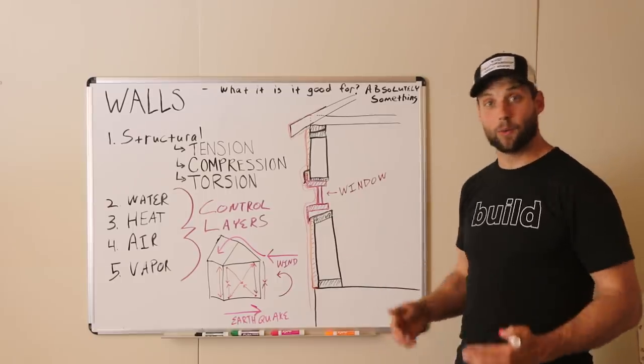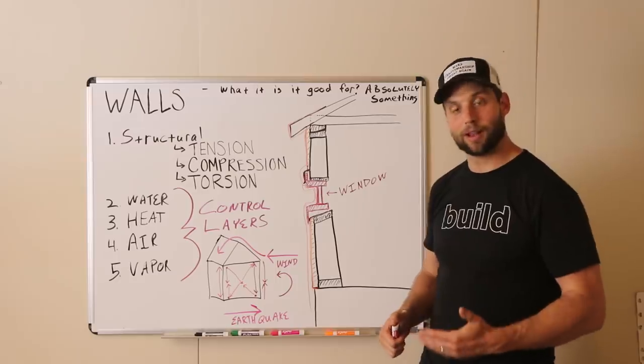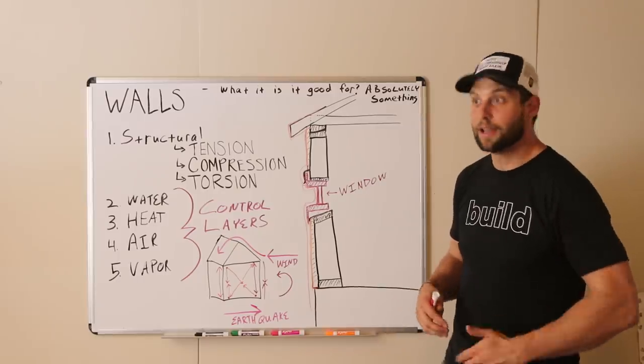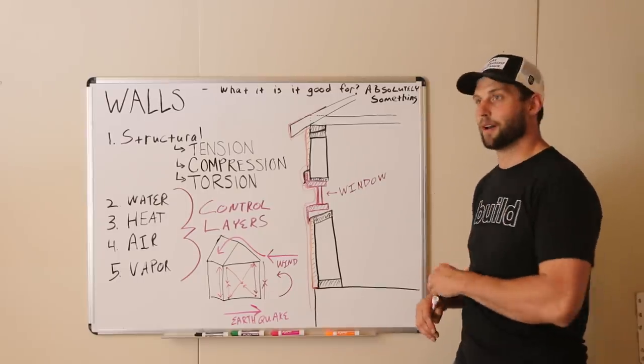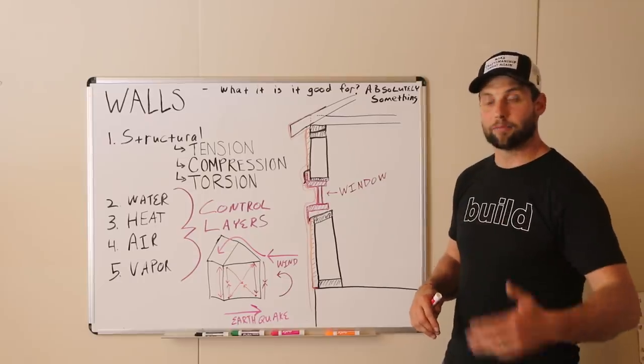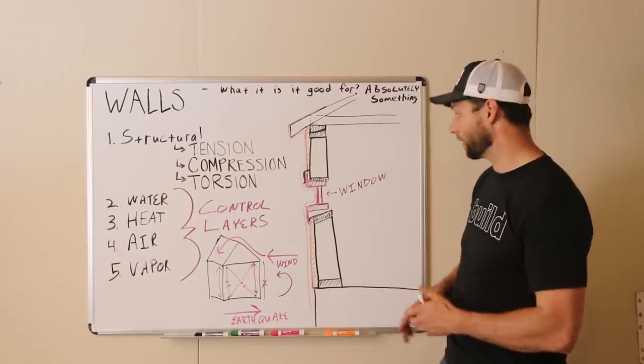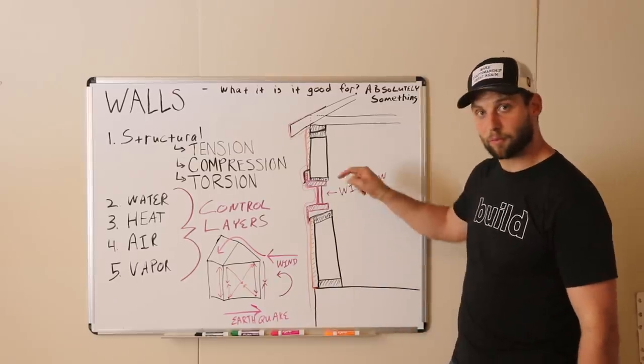So I just assume that my windows will eventually leak. If they never leak, if they're a great window and we use some really high quality windows, if it never leaks, great! We haven't done anything to hurt the assembly. If it does leak, we've just bought ourselves years of protection where we're not having to come in and pull out and do remediation on a water leak. So I assume that the window is going to leak.